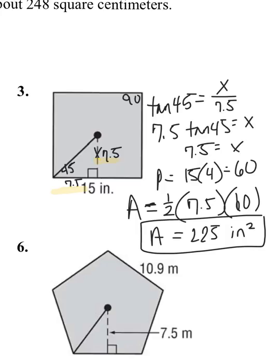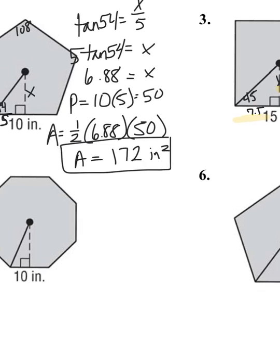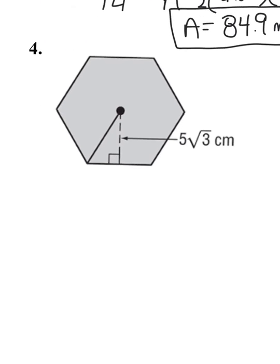We'll do one more question on this side. We'll go on to question number four. I have a radical in there. Still doable. So I know that every one of these corners has 120. If I cut it in half, this is 60. So I can either do special rights or trig functions. A lot of students have a hard time memorizing the special rights. But you know what? We can always rely on trig functions. The one that's different this time is they gave us the apothem, which is the opposite.